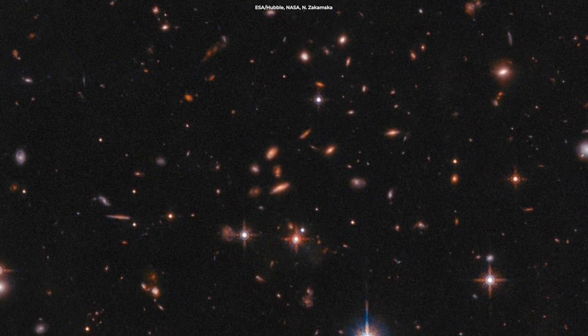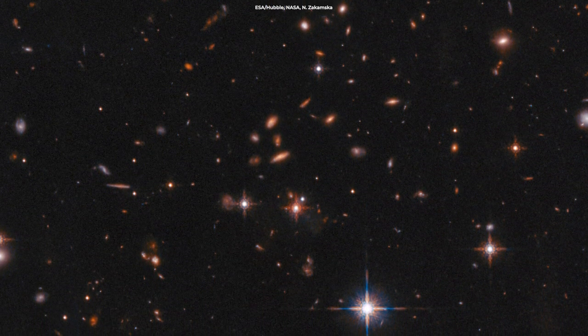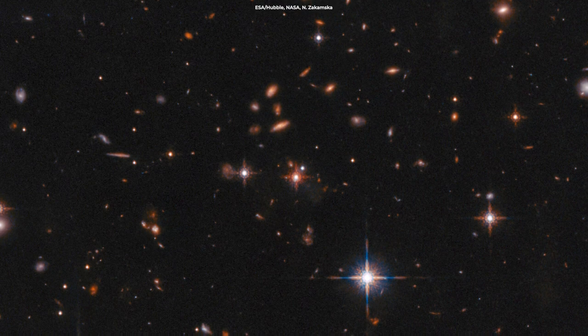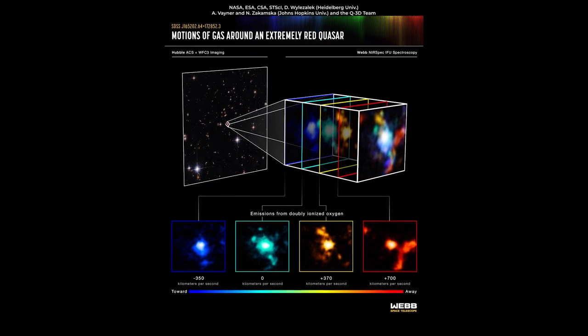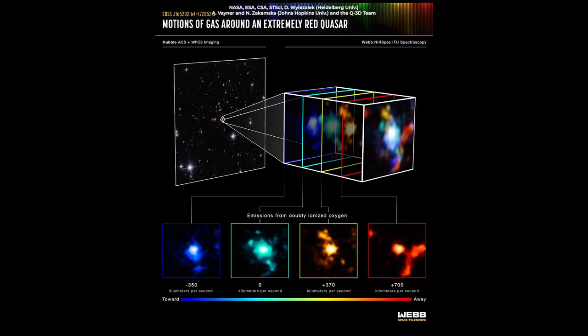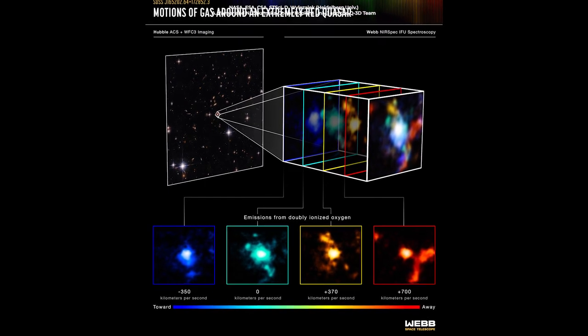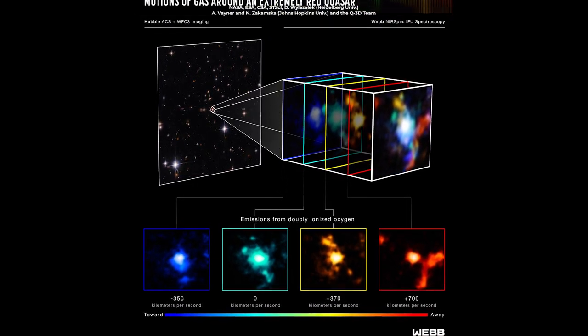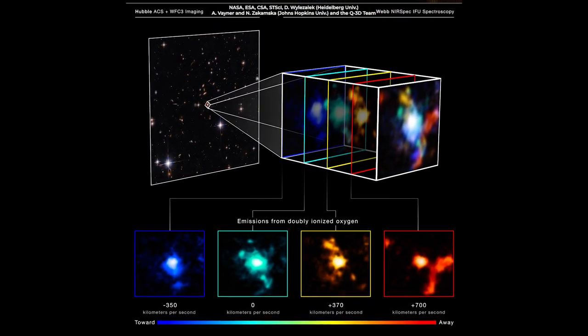Previous data from the Hubble telescope, like this image here, show extended material surrounding this quasar. But with Webb's near-spec instrument, scientists finally map the motions of the material, surprisingly enough, discovering a whole cluster of galaxies.